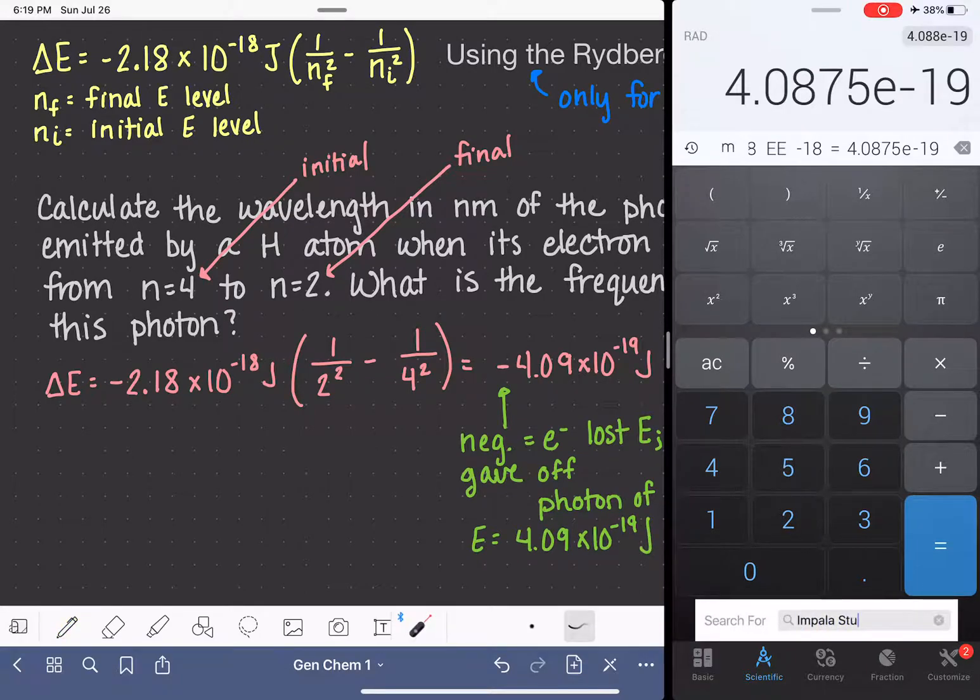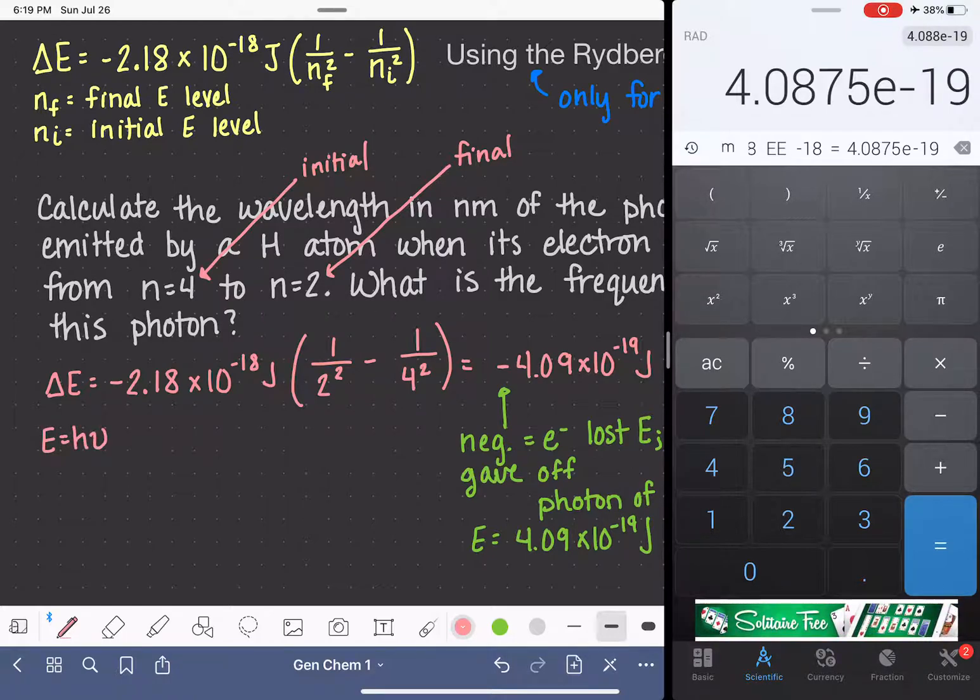And now what we can do is take that energy and use it to figure out what the wavelength is of the photon. So to do that, we have two equations that we can use. We have E equals h nu, or we could use E equals hC over lambda.